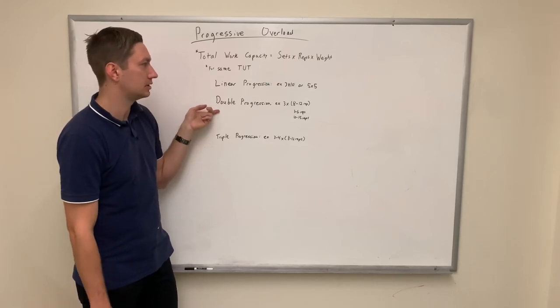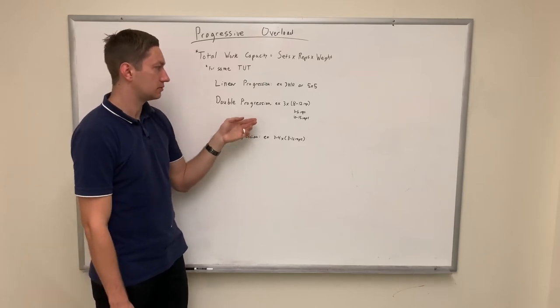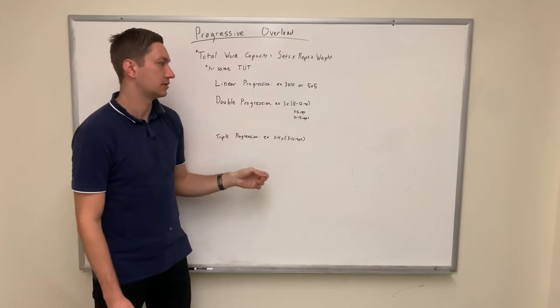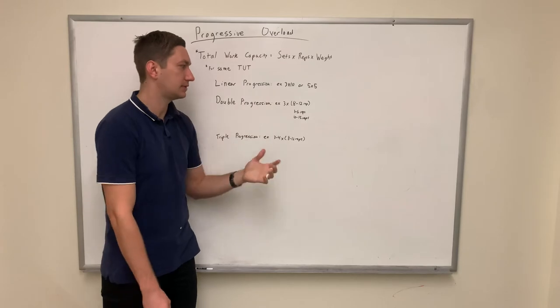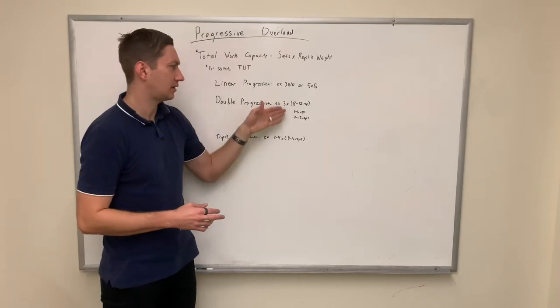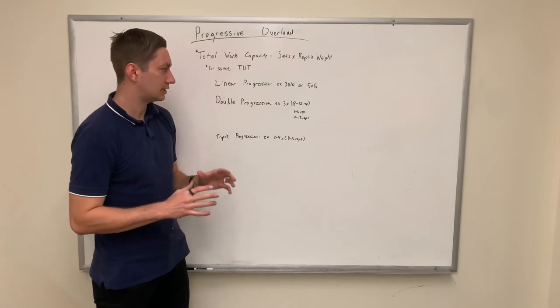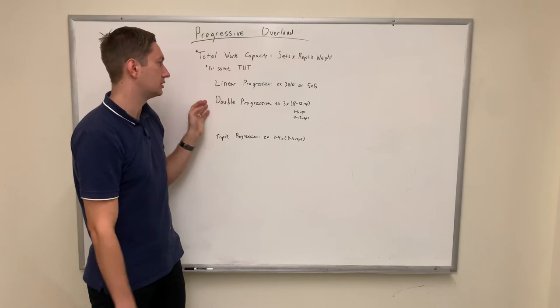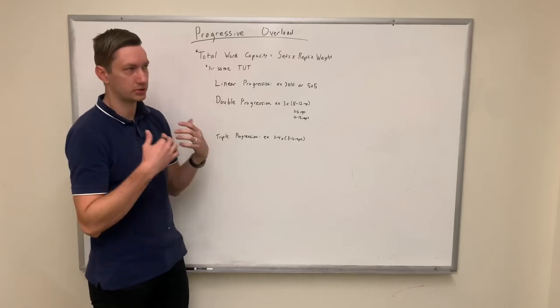And so a double progression is simply saying, we are going to do an example of three sets. And now we have a rep range, so something like eight to twelve reps, three to six reps, ten to fifteen reps. These can vary based on your individual goal. But the idea here is that as you're getting out of the novice stage, you also have to be pushing a lot harder. And so you're much closer to failure.